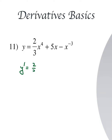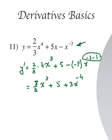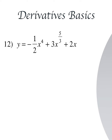Now a mixed question. y prime equals: for the 2/3 x^4 term, drop down the 4 and multiply, giving 8/3 x^3. For the 5x term, in the form ax, the derivative is just 5. For the x to the power negative 3 term, drop down negative 3, giving minus 3 times x to the power minus 4. Simplifying: y prime = 8/3 x^3 + 5 + 3x to the power minus 4.